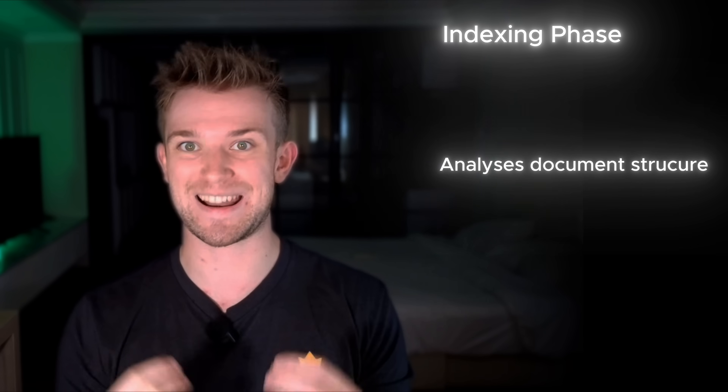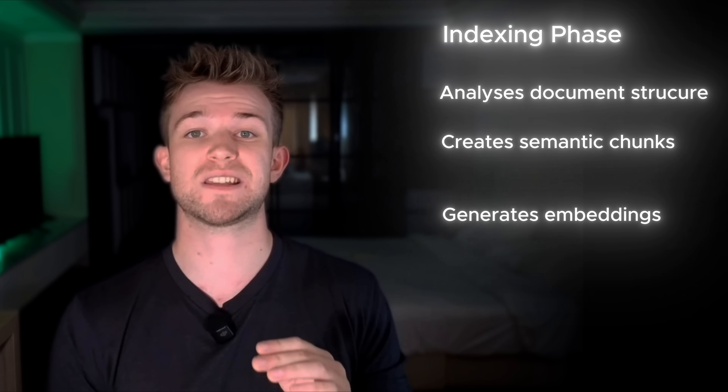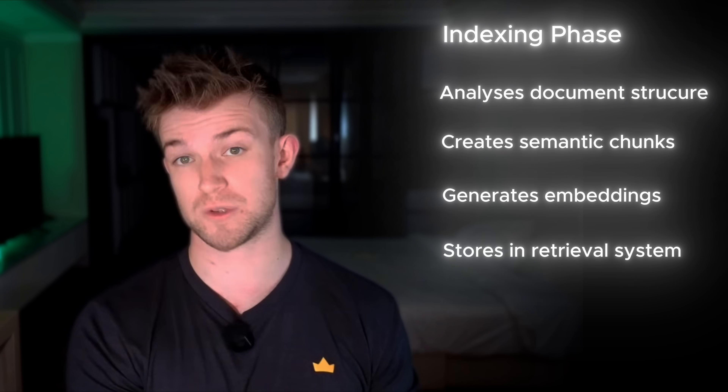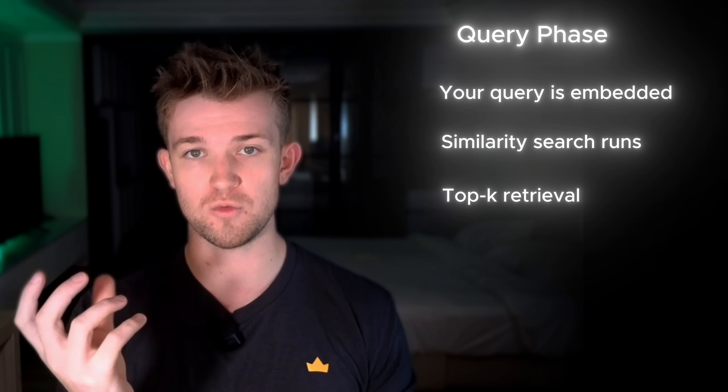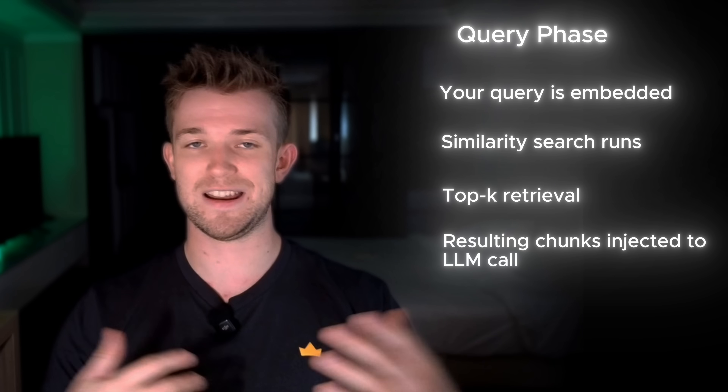For the engineers watching, let's talk about what's actually happening. The file search system has a two-phase approach. First, the offline indexing phase: when you upload a file, Gemini analyzes your document structure and creates semantic chunks with custom overlap strategies. It then generates embeddings based on Google's latest models and stores them in an optimized retrieval system. The second phase is the real-time query phase: your query gets embedded, similarity search runs across all stored vectors, there's top-K retrieval with potential re-ranking, and the relevant chunks get injected back into Gemini's context window. The beautiful part is we don't have to touch any of this — it's all abstracted away, but you get all the benefits from Google's massive R&D investment into making each step state-of-the-art.